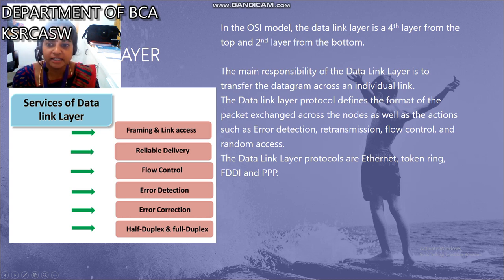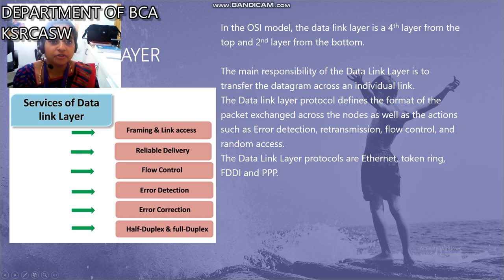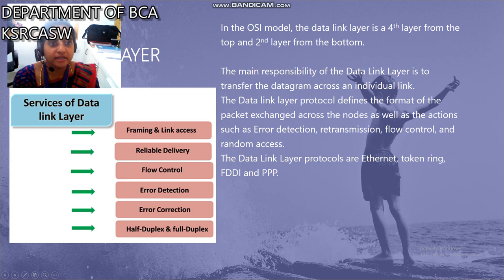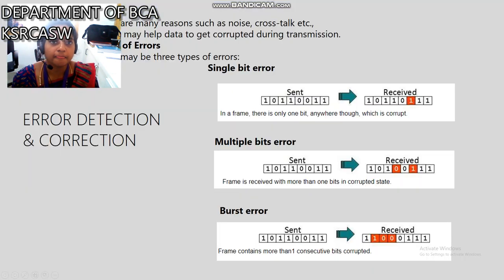The data link layer protocols are Ethernet, Token Ring, FDDI, and PPP. The services of the data link layer include: first, framing and link access; second, reliable delivery; third, flow control; fourth, error detection; fifth, error correction; and sixth, half duplex and full duplex.